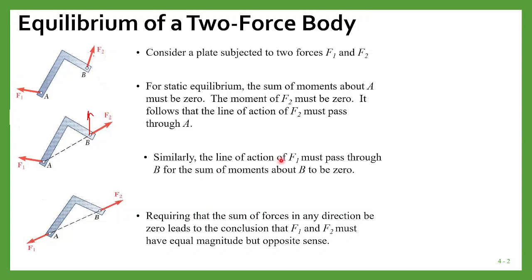Similarly, the line of action of F1 must pass through B. For the sum of moments about B to be zero, considering these conditions, the sum of forces in any direction must be zero, which leads to the conclusion that F1 and F2 must have equal magnitude but opposite sense.